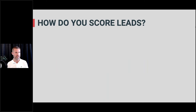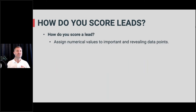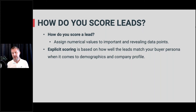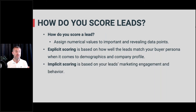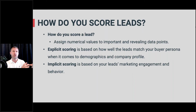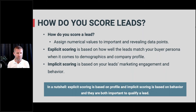So how do we go about scoring leads? You assign numerical values to characteristics, actions, or behavior that you deem important. There are two broad categories. The first is explicit scoring, based on how well your leads match certain criteria in their profile — like company size, industry, and so on. And then there are implicit scoring rules based on behavior: what do these persons do, what do they click on, what do they visit, what do they answer, how often? So explicit scoring deals with who they are or where they work, and implicit scoring deals with what they do.